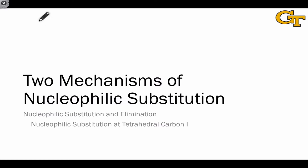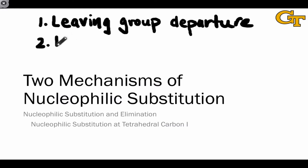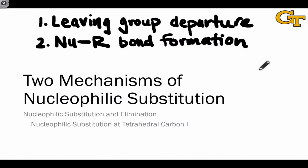We can think of nucleophilic substitution as involving two key processes: leaving group departure and the formation of a bond between the nucleophile and the electrophilic atom, which is typically carbon. The precise mechanism of nucleophilic substitution depends on the order and the timing of these two events.